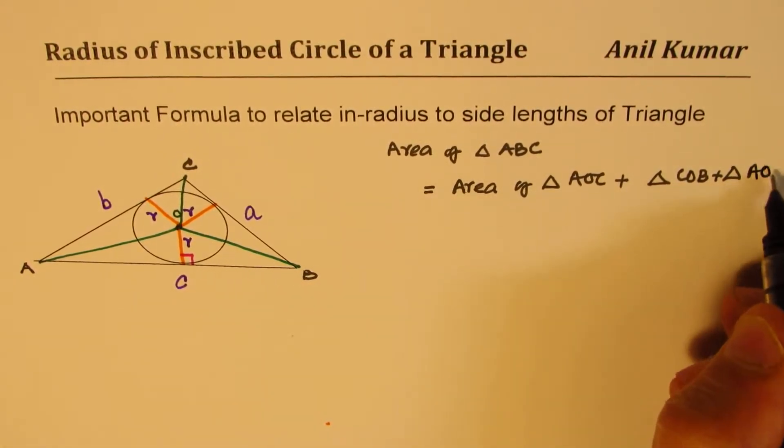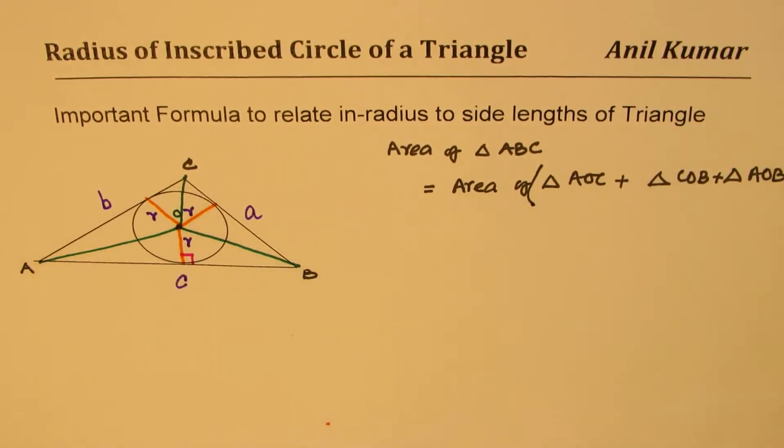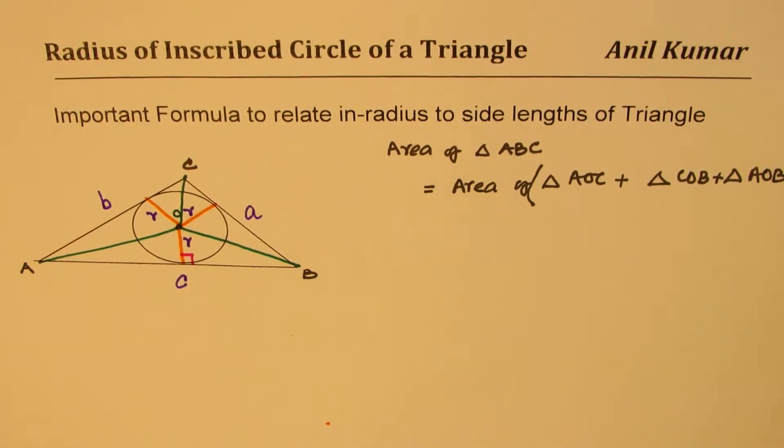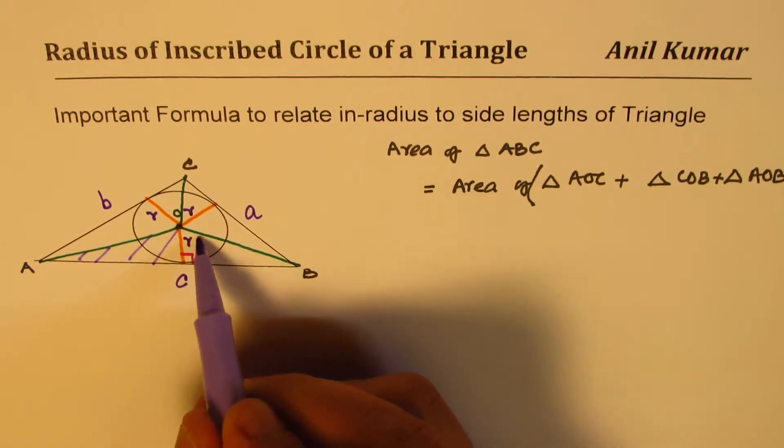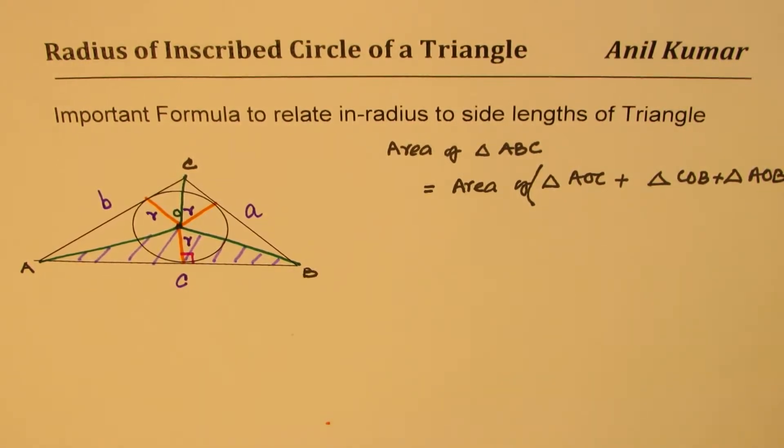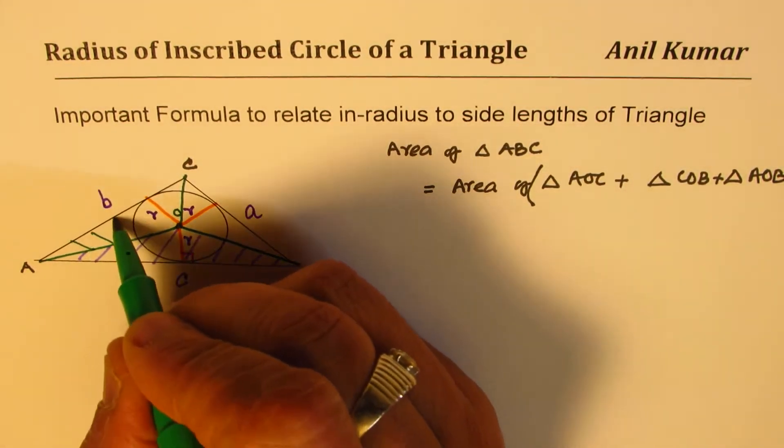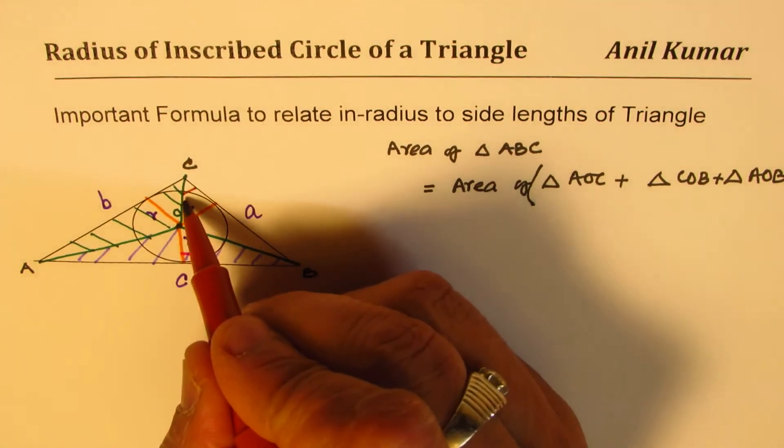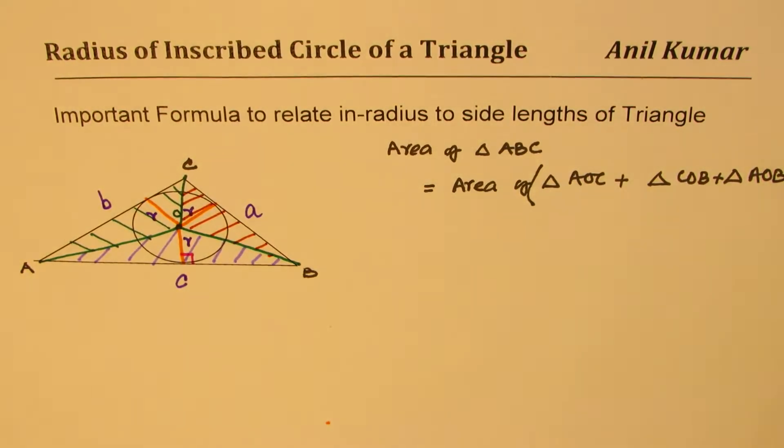So area of all these combined. So we have one of these triangles, that is like one of the triangles. Then we could have the other triangle right there, and the third triangle. So it is sum of all these three triangles.